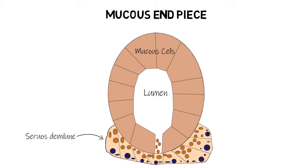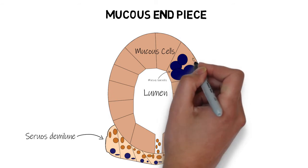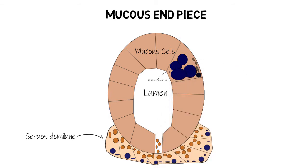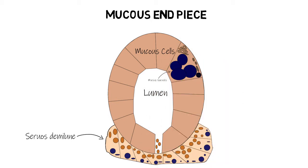The mucous cells have a very important feature: they accumulate large amounts of excretory products in the form of large secretory granules, which appear very dark purple when viewed with an electron microscope. Because of these large granules, the nucleus along with other organelles is pushed to the basal side of the cell. These granules are formed by large Golgi complexes, also located on the basal side of the cells.